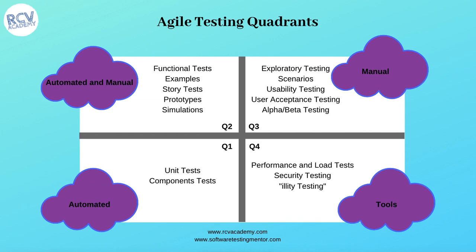Quadrant two is at the system level, is business-facing, and confirms the product behavior. This quadrant contains functional test cases, story test cases, examples, prototypes, or simulations. These tests check the acceptance criteria defined in the stories and improve the quality of story delivery. Q2 test cases are useful when creating automated regression test suites and include both automated and manual test cases — you should automate the majority of Q2 test cases.